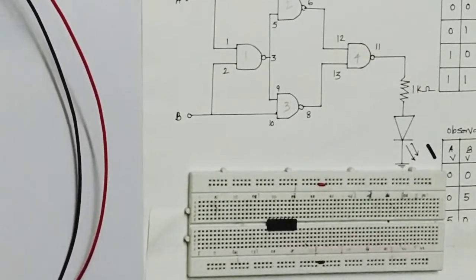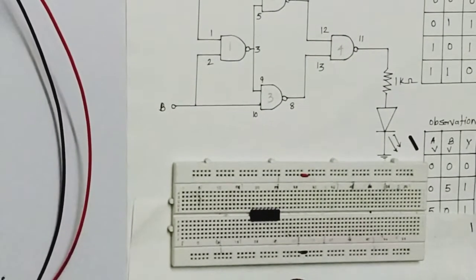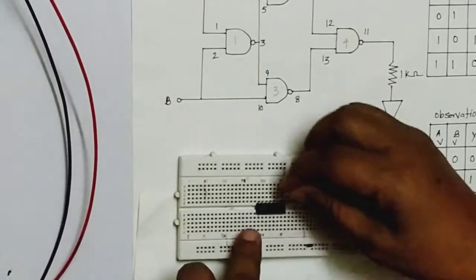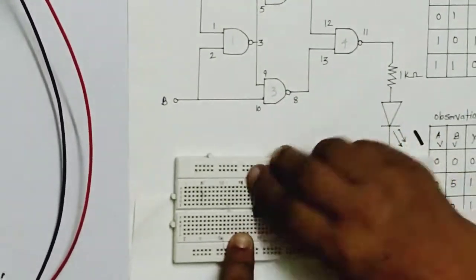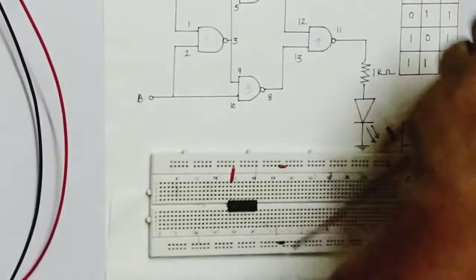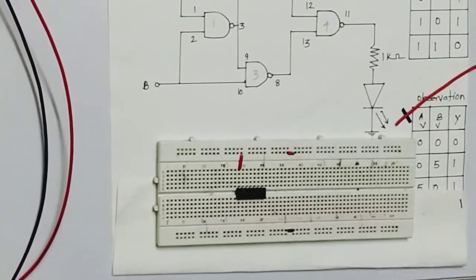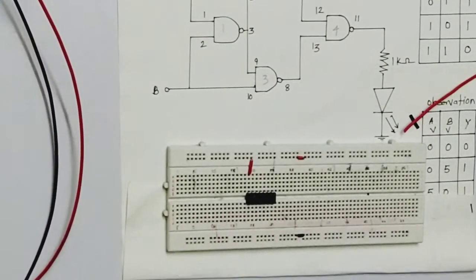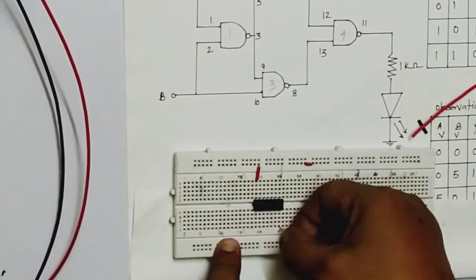We are using the red color wire for VCC. Pin number 14 is your VCC and pin number 7 is your ground. I will cut the wire here — cut it properly using your cutter. Now see pin number 7 for ground.